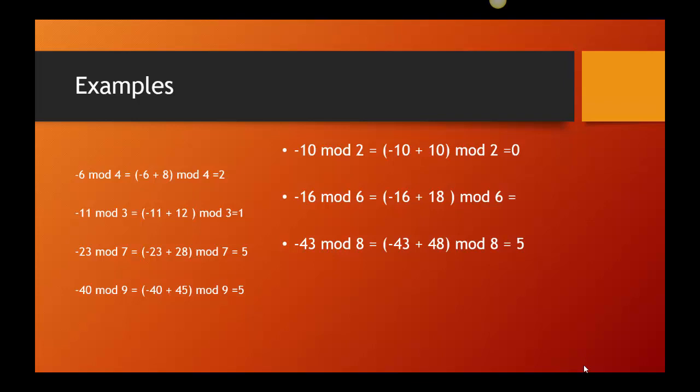Okay. Here I am at negative 40, and I mod 9. So, again, I'm going 9, 18, 27, 36. I need 45. 45 is bigger than 40. So, that negative 40 plus 45 gives me 5.